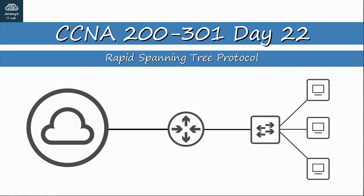In this video we will continue our study of spanning tree, focusing instead on an updated version called rapid spanning tree. More specifically, we'll be looking at Cisco's version, rapid per VLAN spanning tree. You saw in the previous lecture that classic spanning tree can be quite slow, taking up to 50 seconds for the network to converge after a change in the topology. As the name implies, rapid spanning tree improves this time, only taking a few seconds to respond to changes in the network.